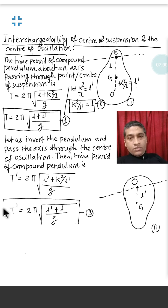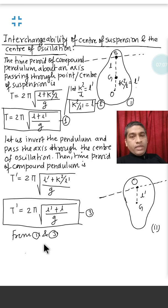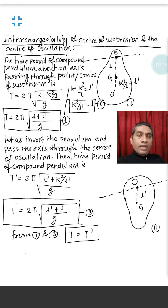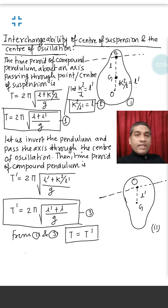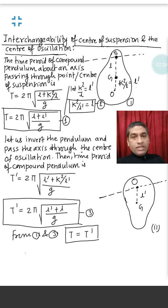From relations 1 and 3, we get T equals T dash. That is, the time period about the center of suspension and the center of oscillation is the same. That is, we can interchange the center of suspension and center of oscillation. That was all for today. Thank you.